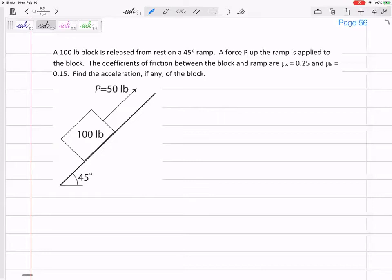Or maybe it's going up the incline, or maybe it's going down the incline. I don't know. And also I'm giving them μs = 0.25, μk = 0.15. Find the acceleration, if any, of the block. What do I want to do? I want to assume no slipping.